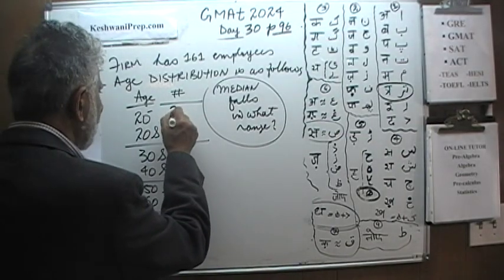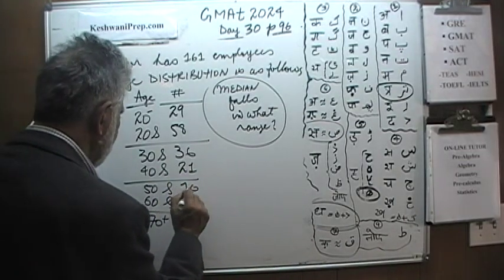We are told that there are 29 employees in this firm out of 161 who are under 20 years, younger than 20 years. We have 58 people who are in their 20s, 36 people who are in their 30s, 21 people who are in their 40s. We are told that there are 10 people in the 50s, 5 people in the 60s and we have two people apparently who are veritable geysers. Go ahead, do it yourself. The question simply is this. The question simply is, what's the median? Median falls in which of these range here?